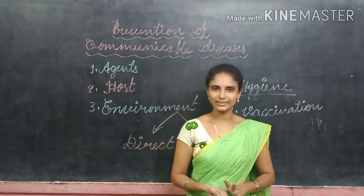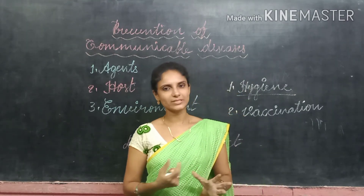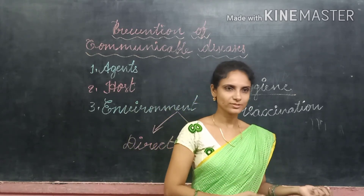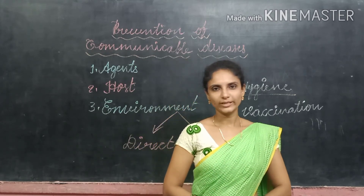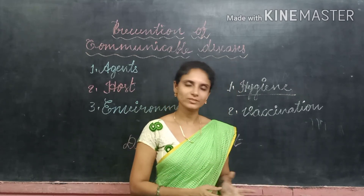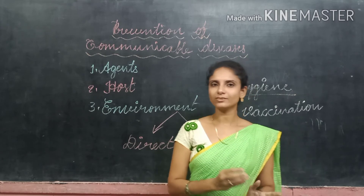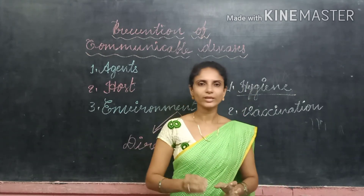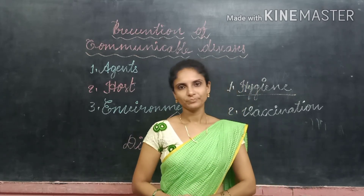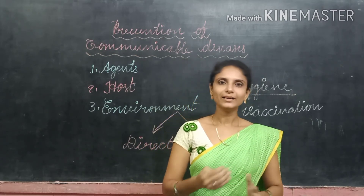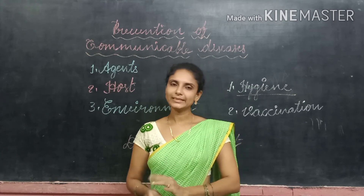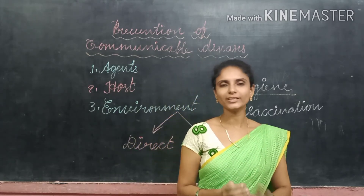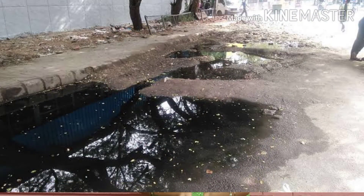Regarding surroundings hygiene: to stay healthy, we must keep our surroundings clean — our house, school, neighborhood, and street. Some people make surroundings dirty by throwing garbage on the road and letting sewage flow under the roads, which causes surroundings to become a breeding ground for insects, mosquitoes, and flies. A breeding ground is a place which favors the growth of mosquitoes and flies.